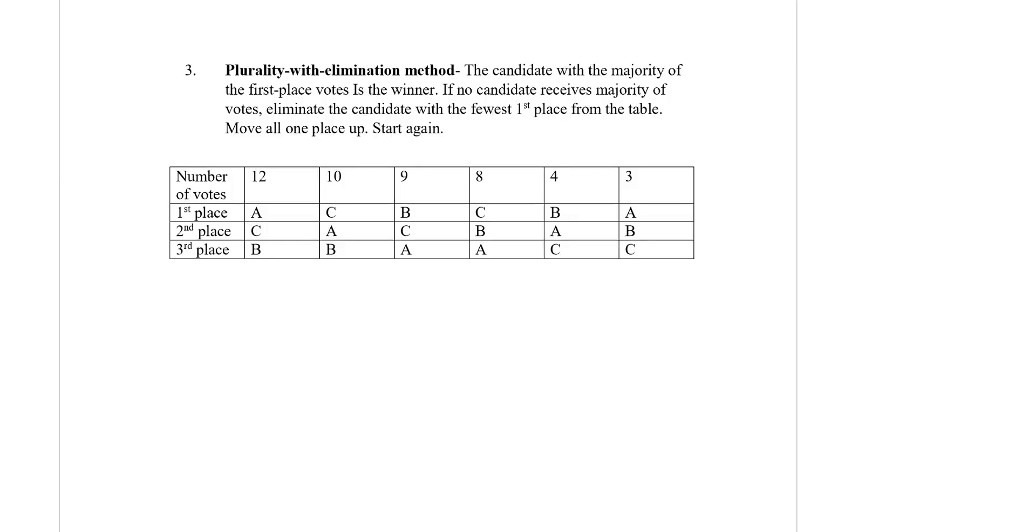In this video we'll talk about the third voting method called plurality with elimination method. The candidate with a majority of first place votes is the winner. If no candidate receives majority of votes, eliminate a candidate with the fewest first place from the table. Move all one place up, start again.